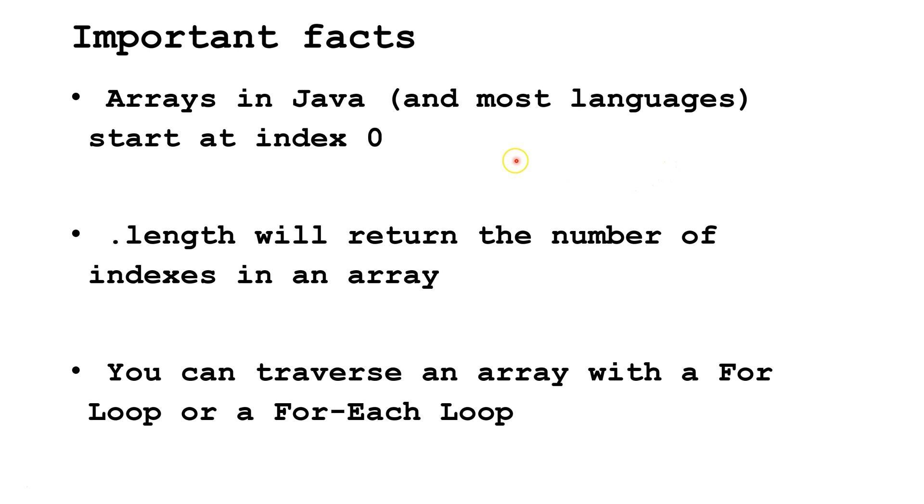Some important facts to know. Arrays in Java and most languages start at index 0. That means the first index will actually be index 0. Dot length will return the number of indexes in an array. Since the indexes start at index 0, that means an array of size 5 will have indexes 0, 1, 2, 3, and 4.